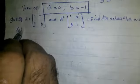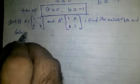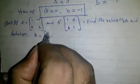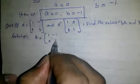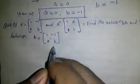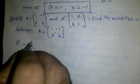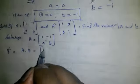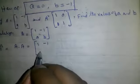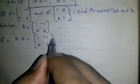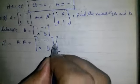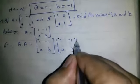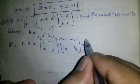Let's solve. Solution: A is equal to 1, -1, a, b. A square is equal to A into A, which is equal to 1, -1, a, b into 1, -1, a, b.